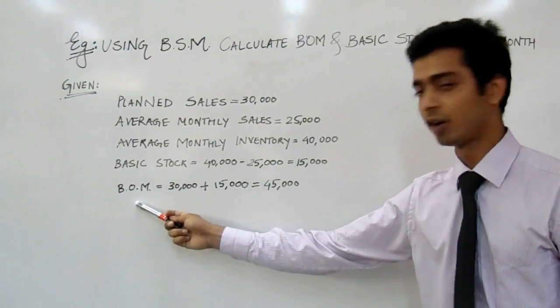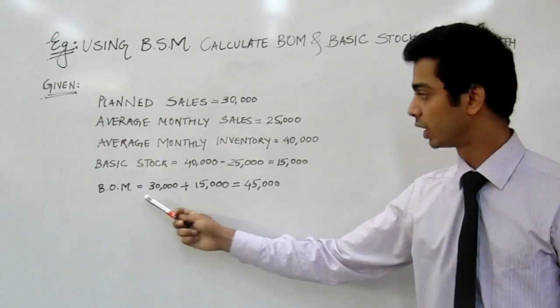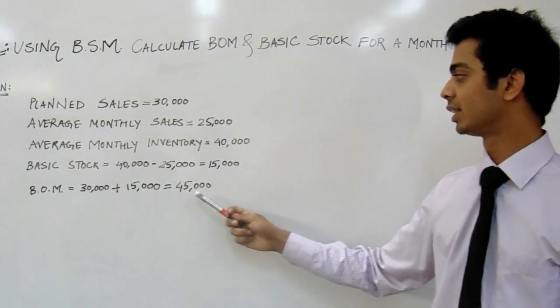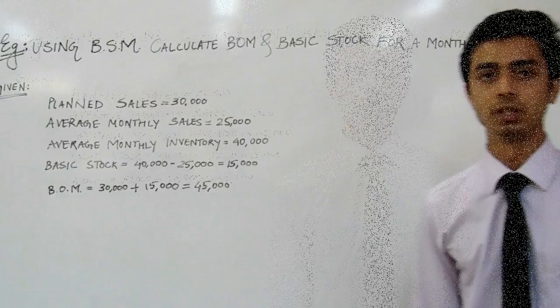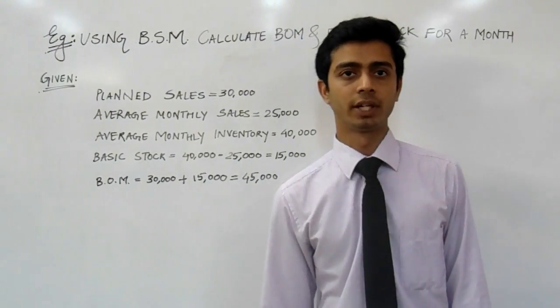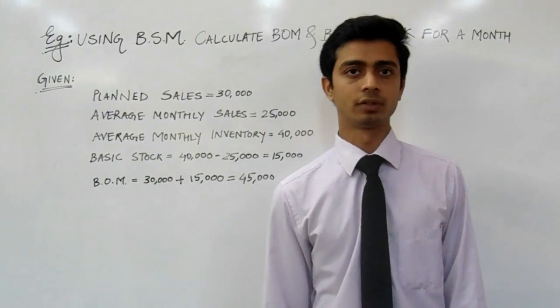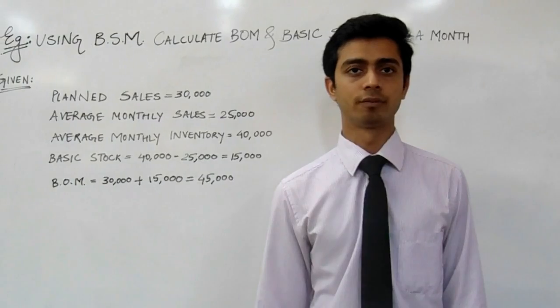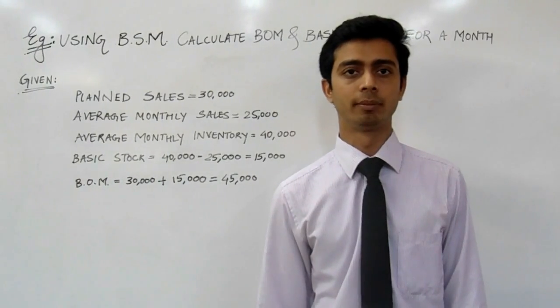And beginning of month stock is equal to 30,000 plus 15,000, that is equal to 45,000. So the retailer should maintain a 45,000 level of stock at the beginning of the month to meet the demand.